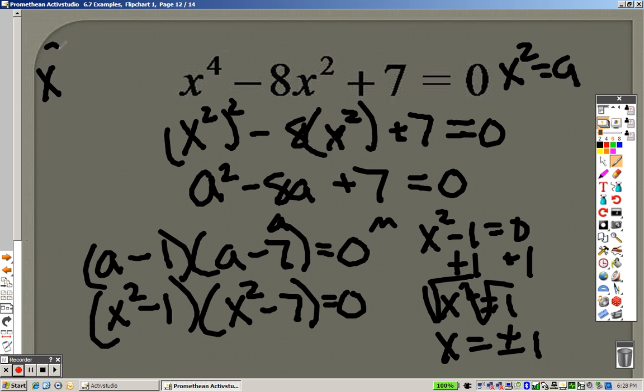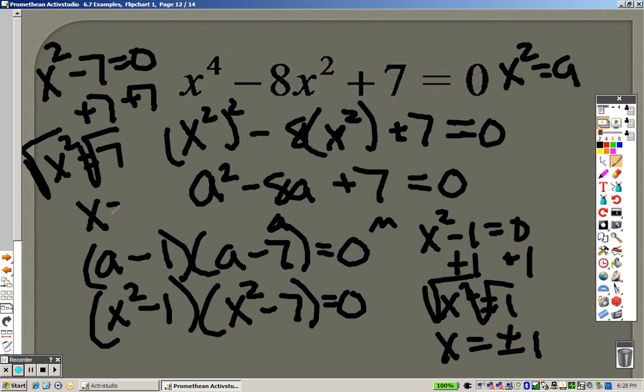And, over here, x squared minus 7 equals 0. I can add 7 to both sides. So, I get x squared equals 7. I can square root both sides and get x equals plus or minus the square root of 7. So, there are two answers and four answers to the problem.